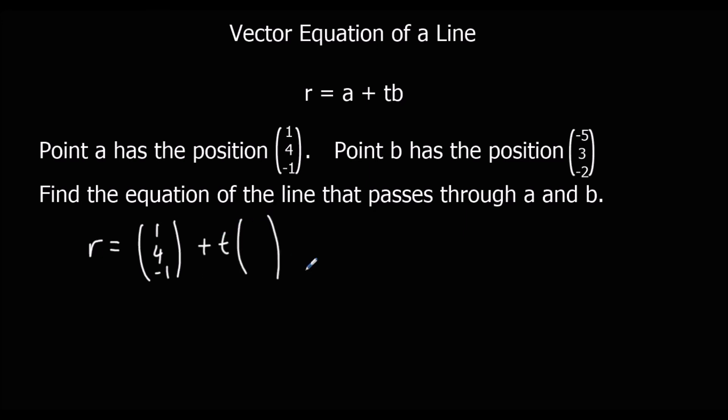Times the direction. So if we work out a to b, that would be b take away a. (-5, 3, -2) take away (1, 4, -1). That gives us negative 5 take away 1 is negative 6, 3 take away 4 is negative 1, and negative 2 take away negative 1 is negative 1.